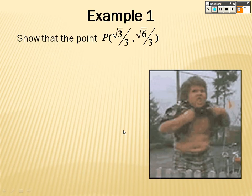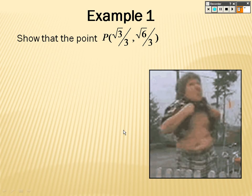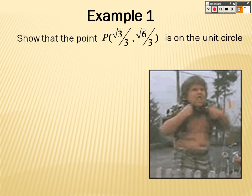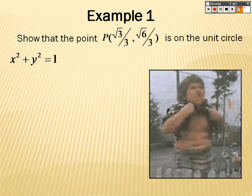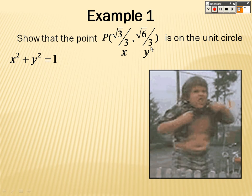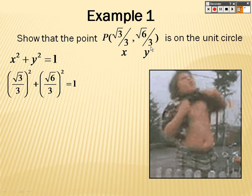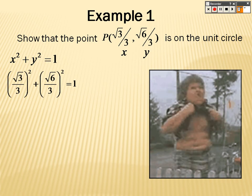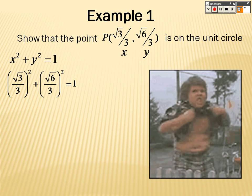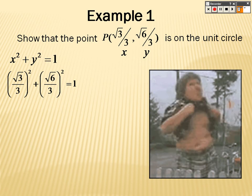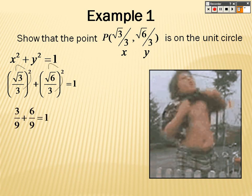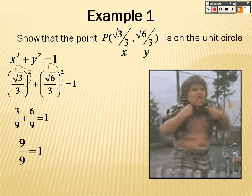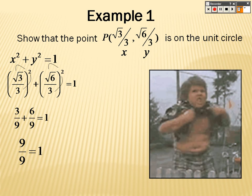Show that the point (√3/3, √6/3) is on the unit circle. It's very simple — use the formula x² + y² = 1. That's x and that's y, so it's (√3/3)² + (√6/3)² = 1. You take the square through to both, so you get 3/9 + 6/9, which gives 9/9, which is 1. So that point is on the unit circle — that's true.